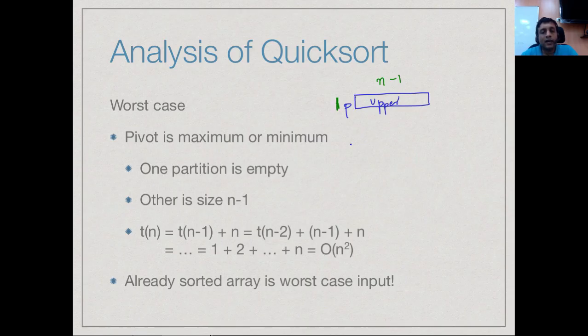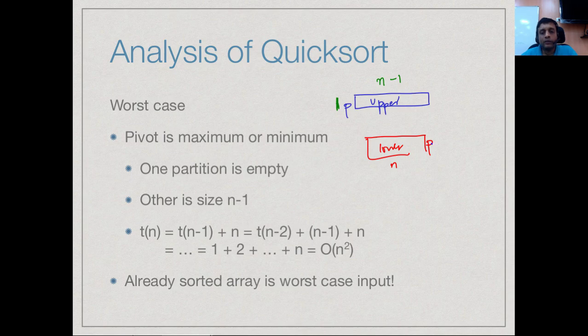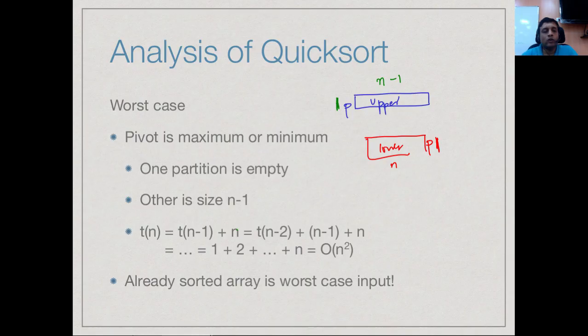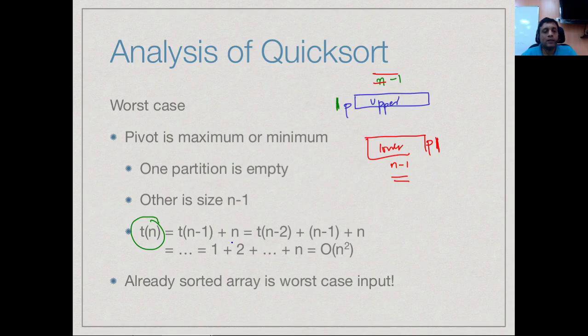Symmetrically, if the pivot is the largest value, you have everything in the lower element set of size n minus 1, and nothing in the upper set. Now to sort this array of size n, I have to then sort a smaller segment which is only n minus 1. So t of n takes t of n minus 1 plus n, where n is the time taken to partition and t of n minus 1 again in the worst case will have a pivot element which is an extreme value.